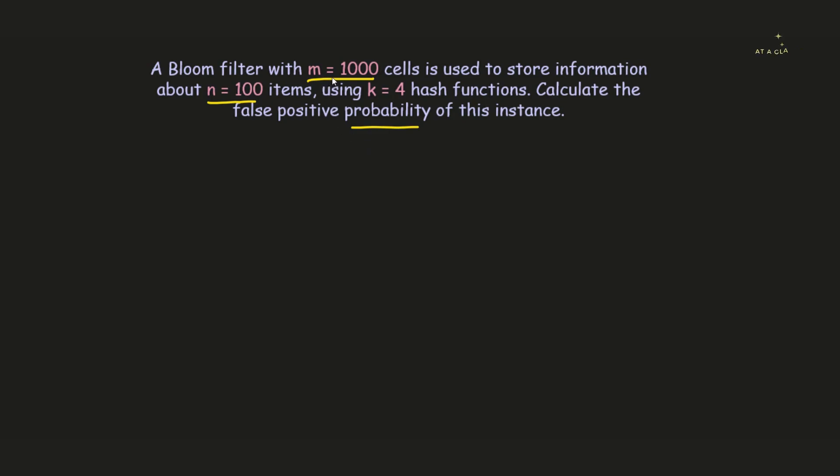So here we have m. What exactly is this m? m is the total number of cells that are present inside the Bloom filter. If you remember, Bloom filter was like an array data structure with certain cells inside it. So here it is given that the Bloom filter contains a total of 1000 cells.